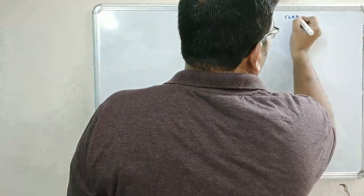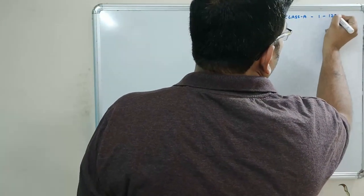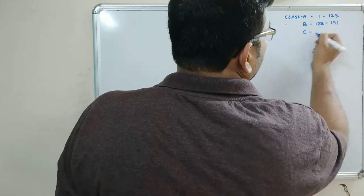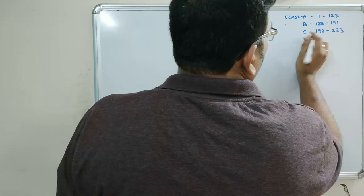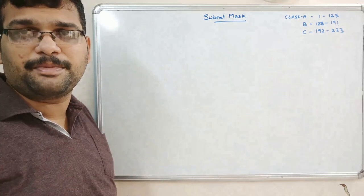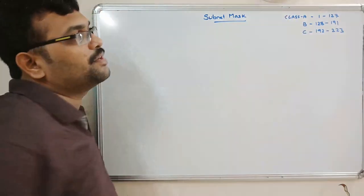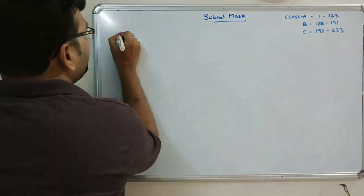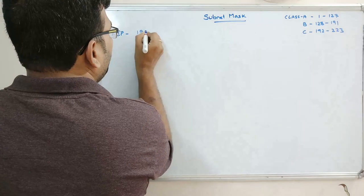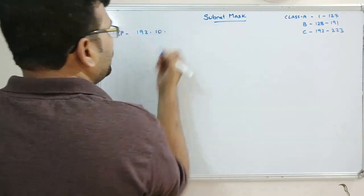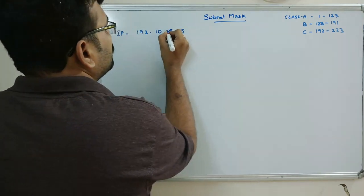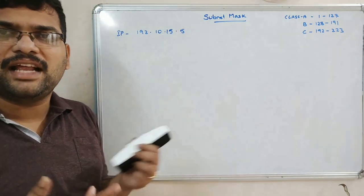The range for class A is 1 to 127, class B is 128 to 191, and class C is 192 to 223. Class D is used for multicasting and class E is for research and experimental purposes. Let us take the example IP address 192.10.15.5.